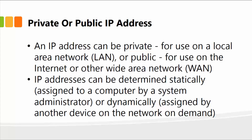IP addresses can be determined statically — in other words, you can log on to a computer, laptop, or device and physically specify an IP address for that computer — or dynamically assigned by another device on the network on demand. For example, if your computer does not have a unique IP address, as soon as you turn your computer on, the central server on your network will give you an IP address. So it can be static, meaning a permanent IP address for that computer, or it could be dynamic. We'll take a look at DHCP, or dynamic allocation of IP addresses, a little later.